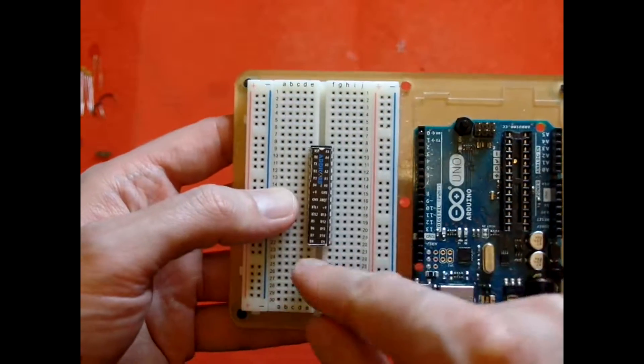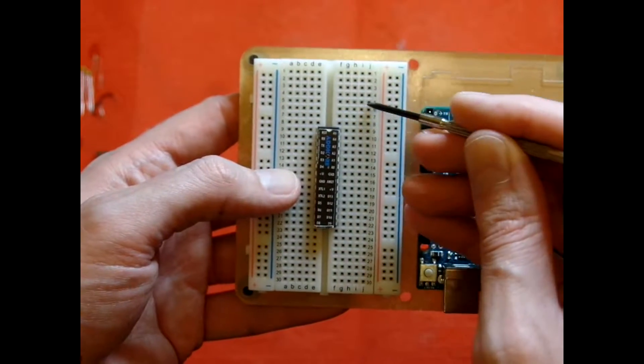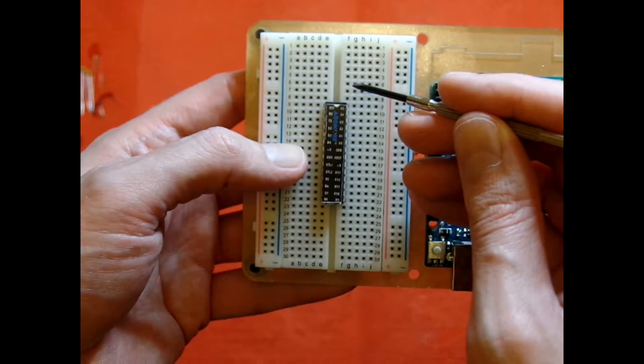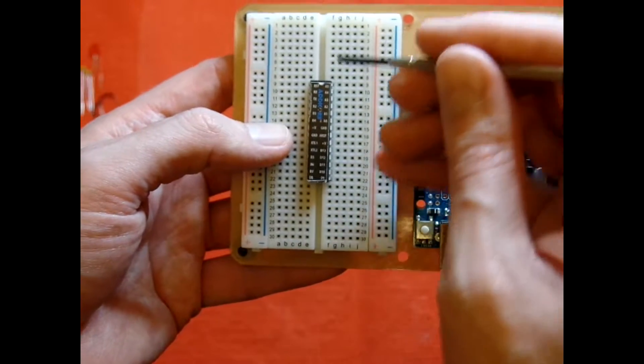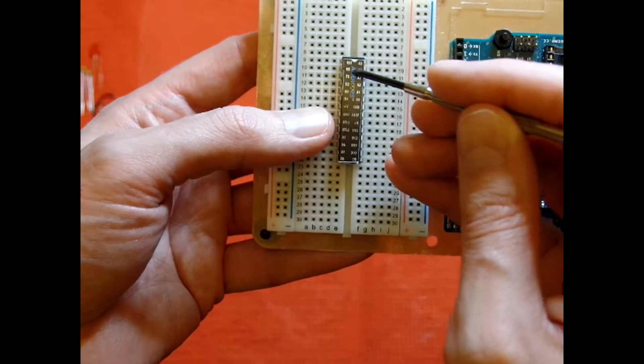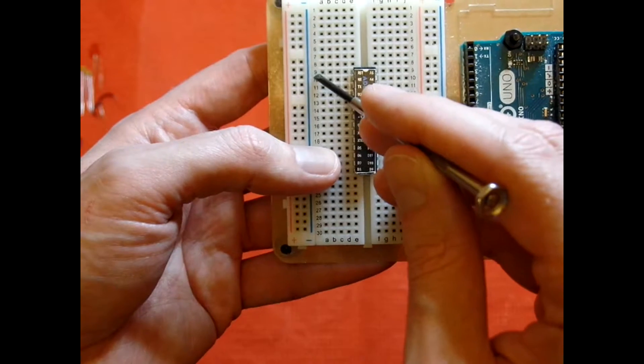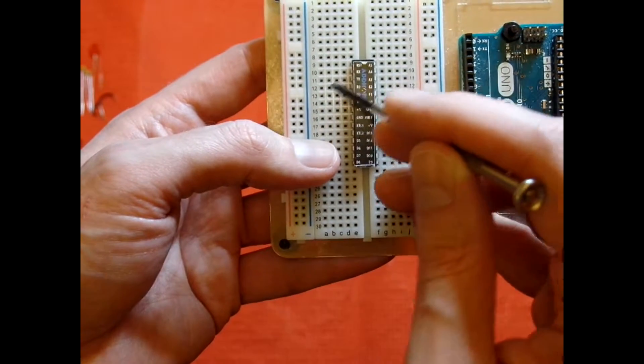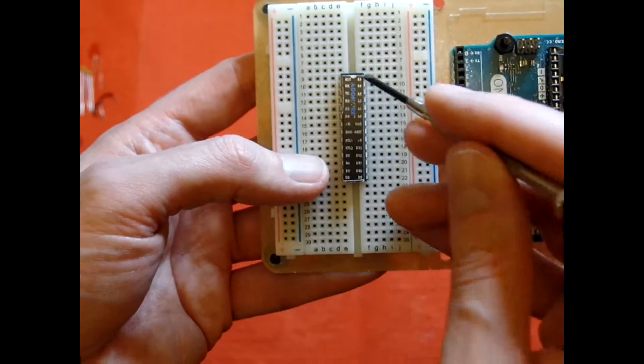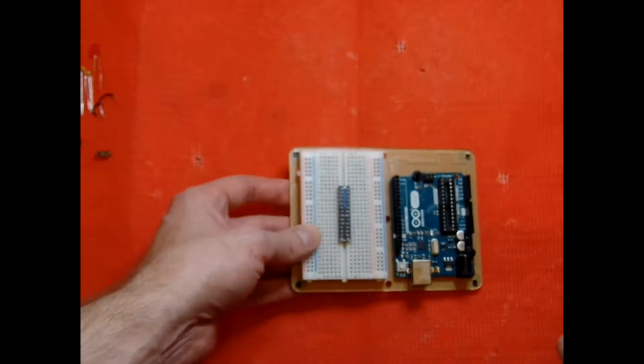The reason why we want to bridge it across this gap is because if you're not familiar with breadboards, each horizontal line here is electrically connected. And so we don't want to connect the pins on both sides of this chip. So this whole row is connected with the first pin. This whole row is connected with the second pin, and so on with all the other pins. Okay, so that's the reason for that.